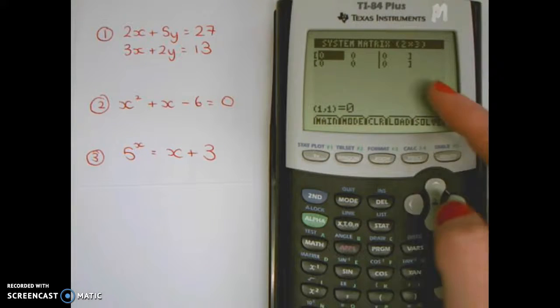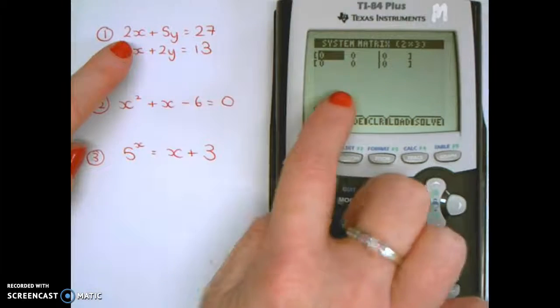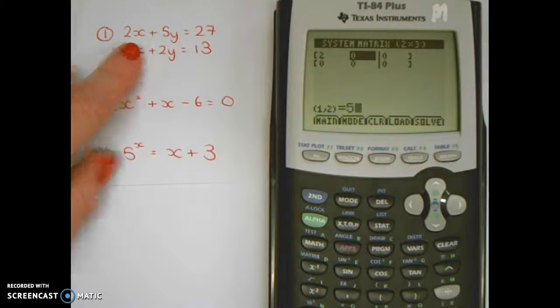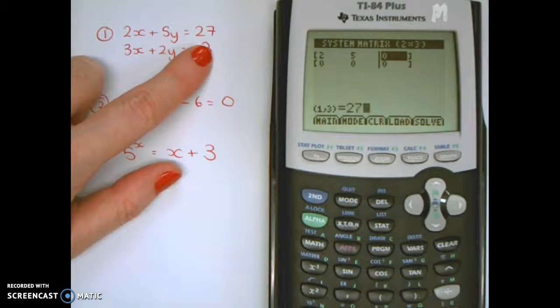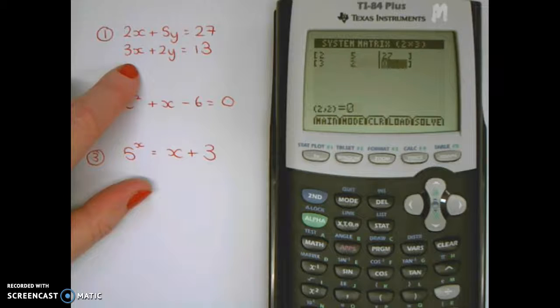Here it asks you to type in your system matrix. You type in these two coefficients first. So we'll type two, then five. Then this one after the line is what your answer is, which is 27. The bottom row is three, two, 13.